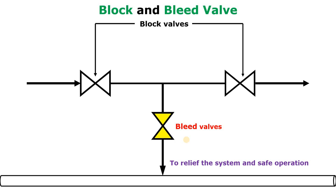Hello engineers. In this video we are going to discuss why the block and bleed valve is given in the piping system, like at the suction line of the pump or at the discharge line of the pump. So why is this block and bleed valve given? That is a very important question with respect to safety as well as with respect to interviews.